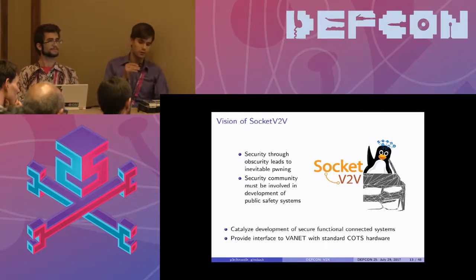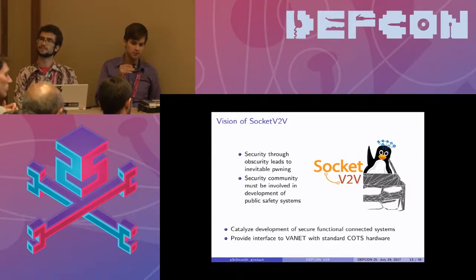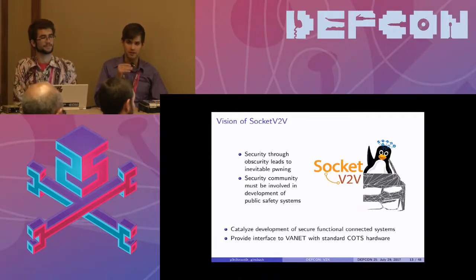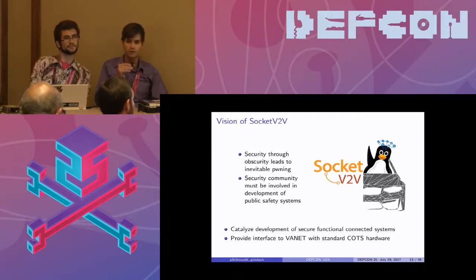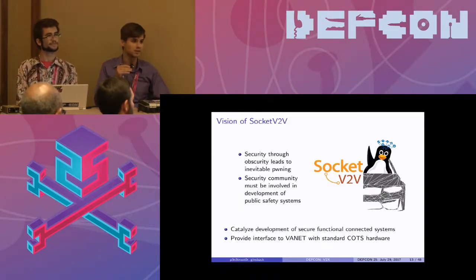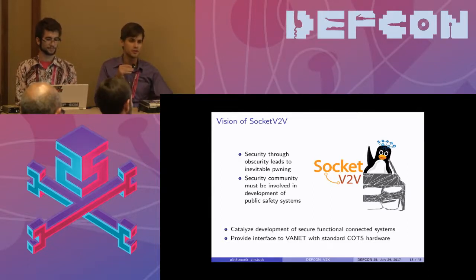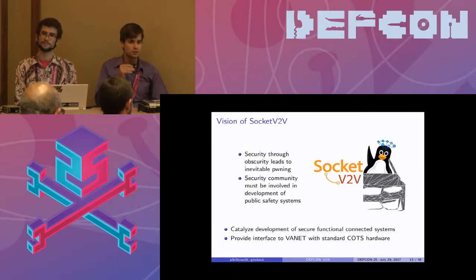Our approach to developing these things is to create an open-source software solution that allows you to use commodity hardware — specifically the Atheros 9K chipset on Linux — to do 5.8 to 5.9 GHz transmission in OCB mode and do V2V, to allow anyone to develop their own systems, test, validate, and further development of V2V systems and vehicular ad hoc networks so that future standards can build upon cooperative data collection.